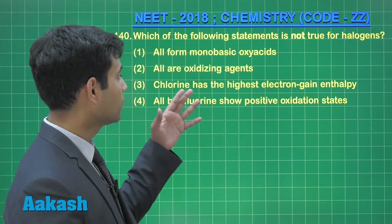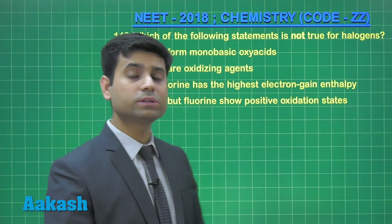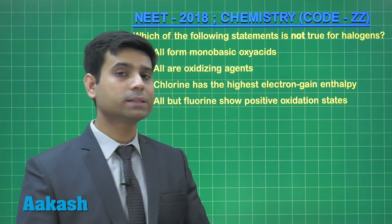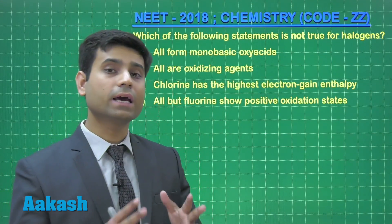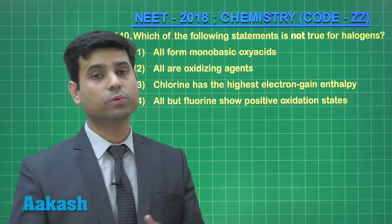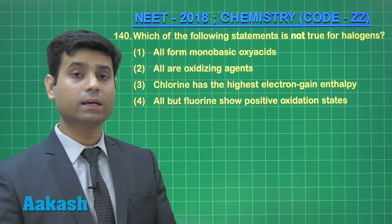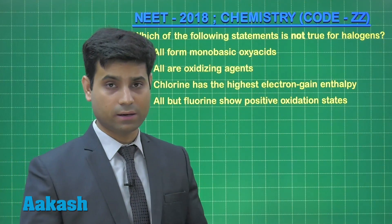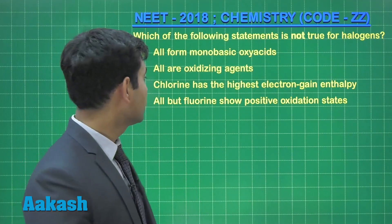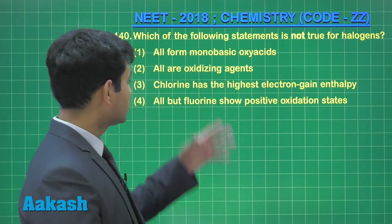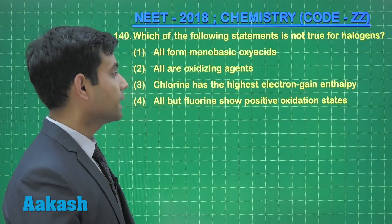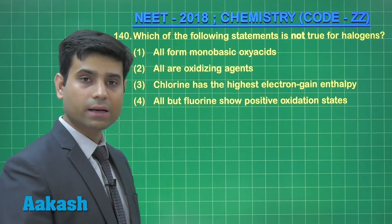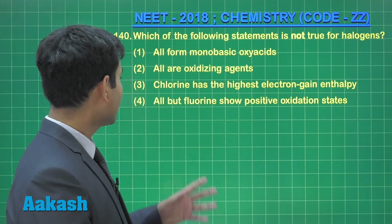All the halogens form oxy acids like HOF, HOCl, HOBr, and similarly HOClO, etc. So this statement is correct.